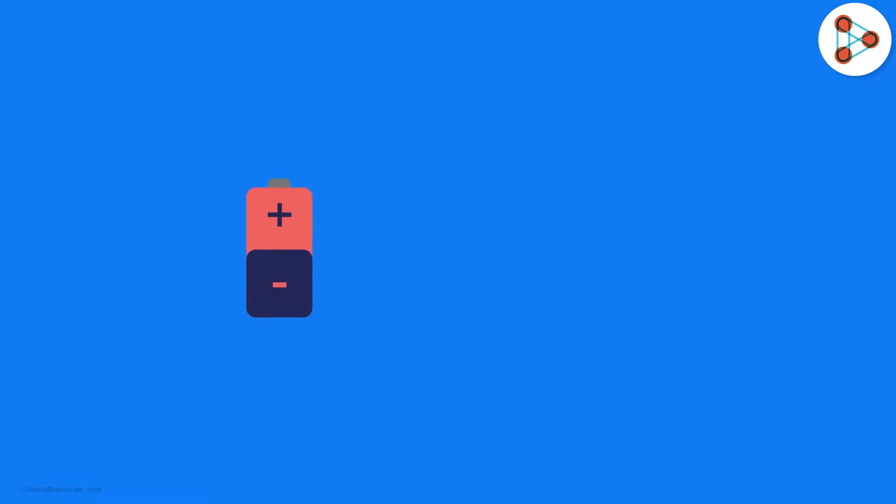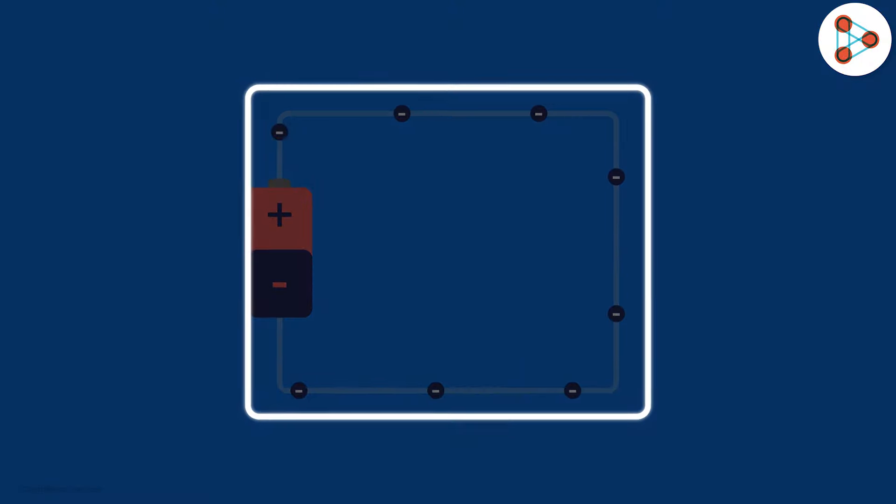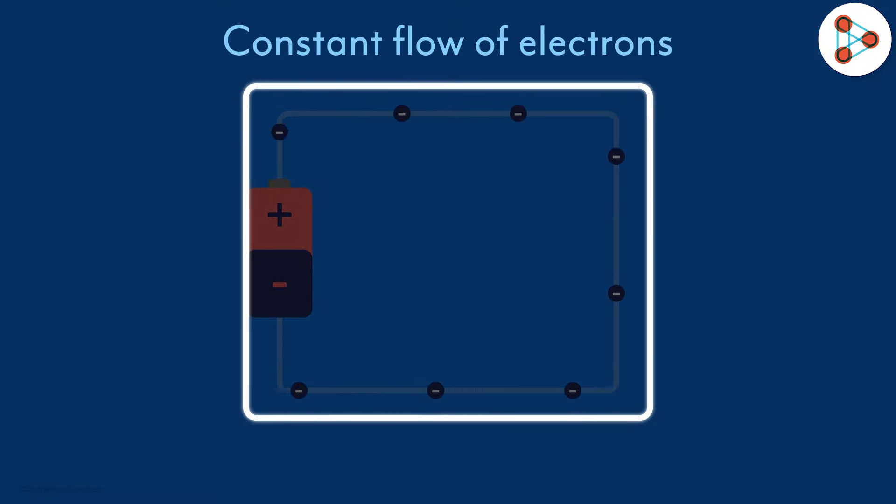This is a battery and this is a wire from which the electricity will flow. As you can see, the path is completed from one end to the other. With this loop, there will be a constant flow of electrons.